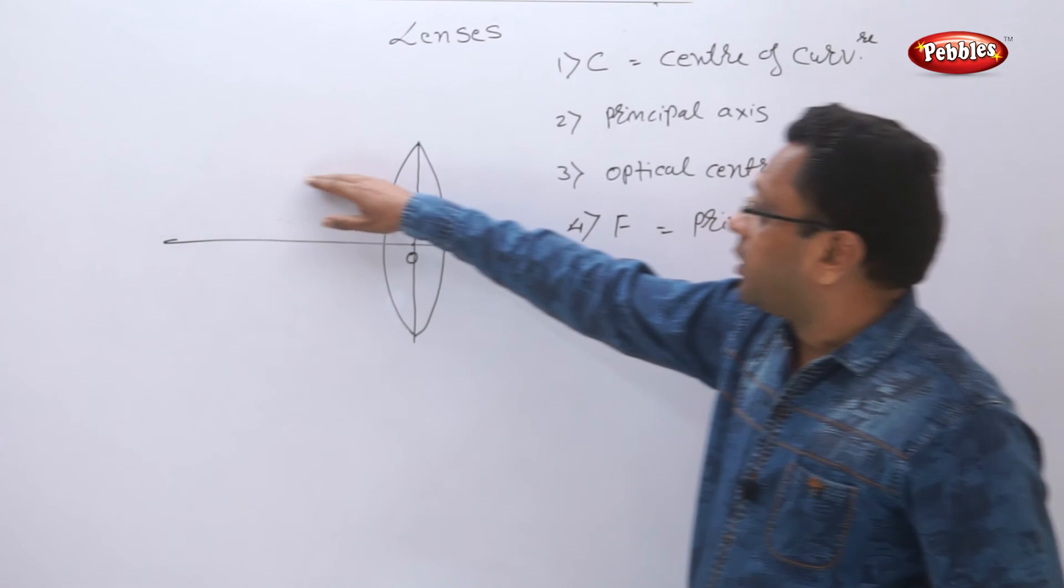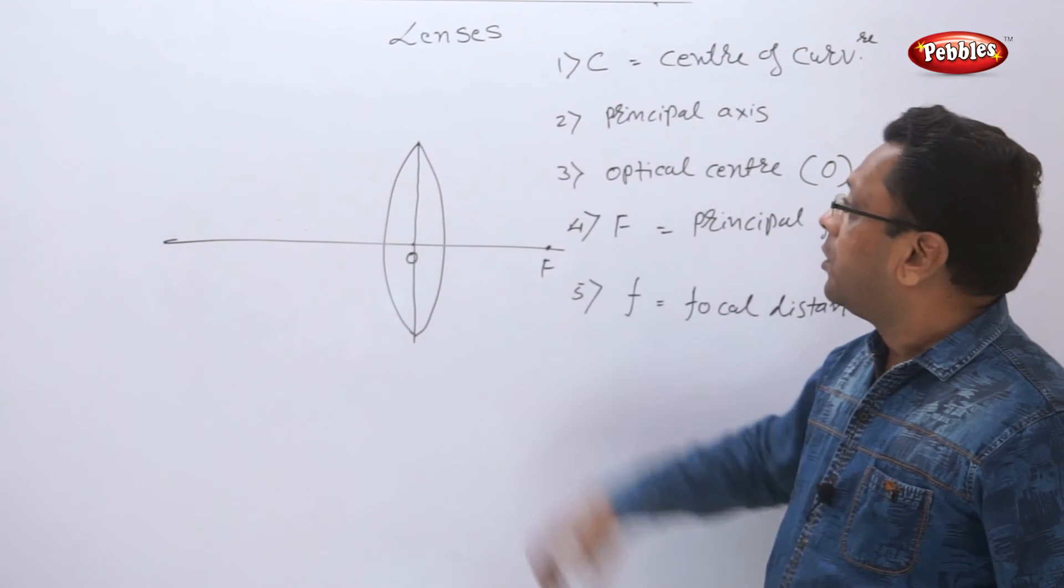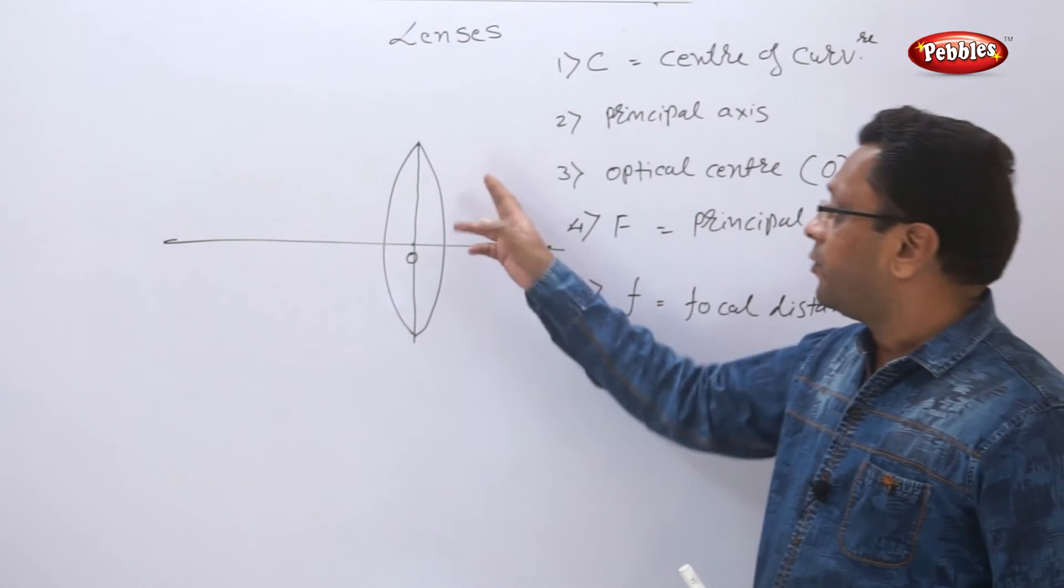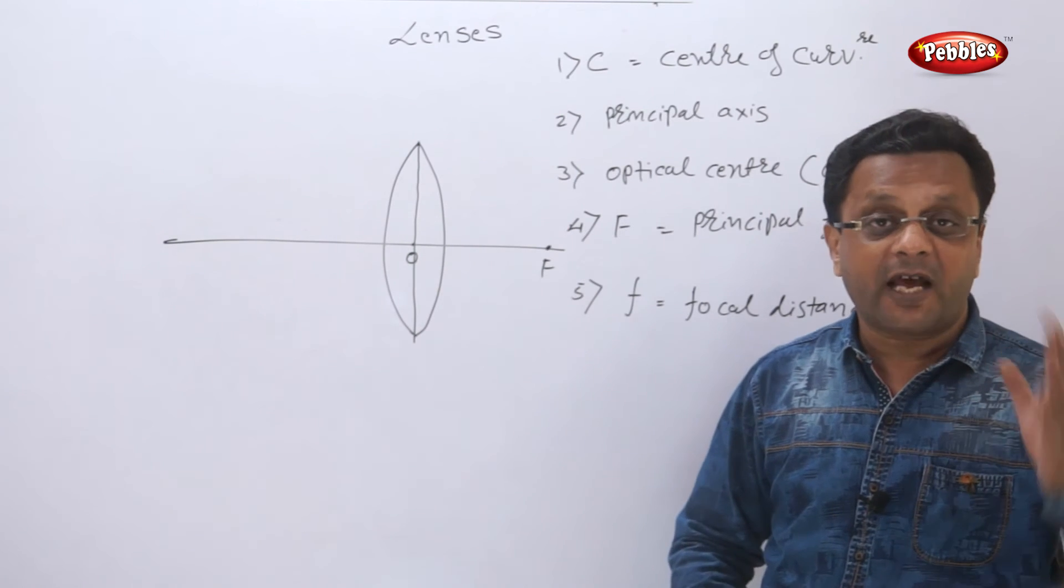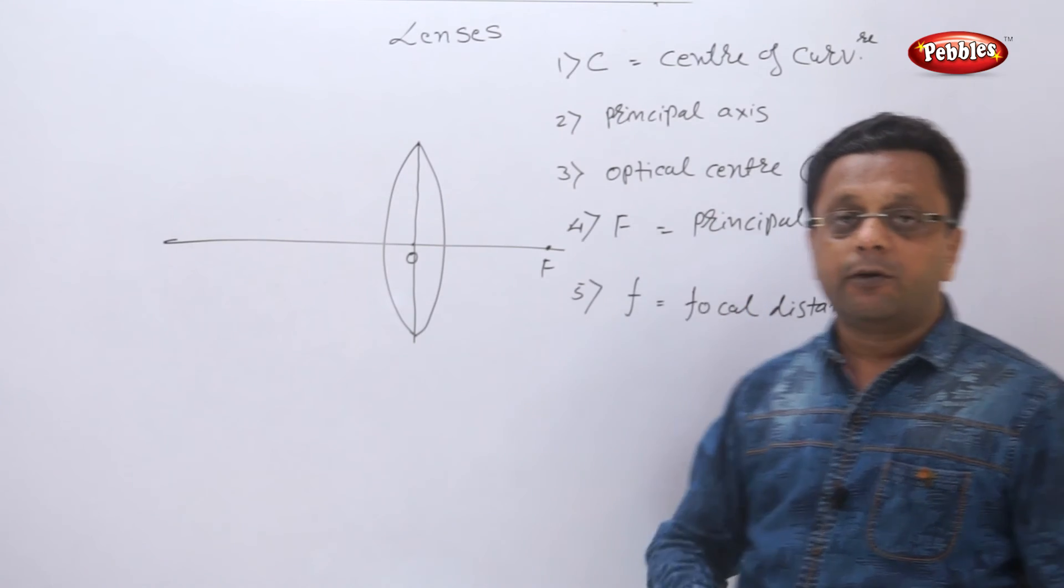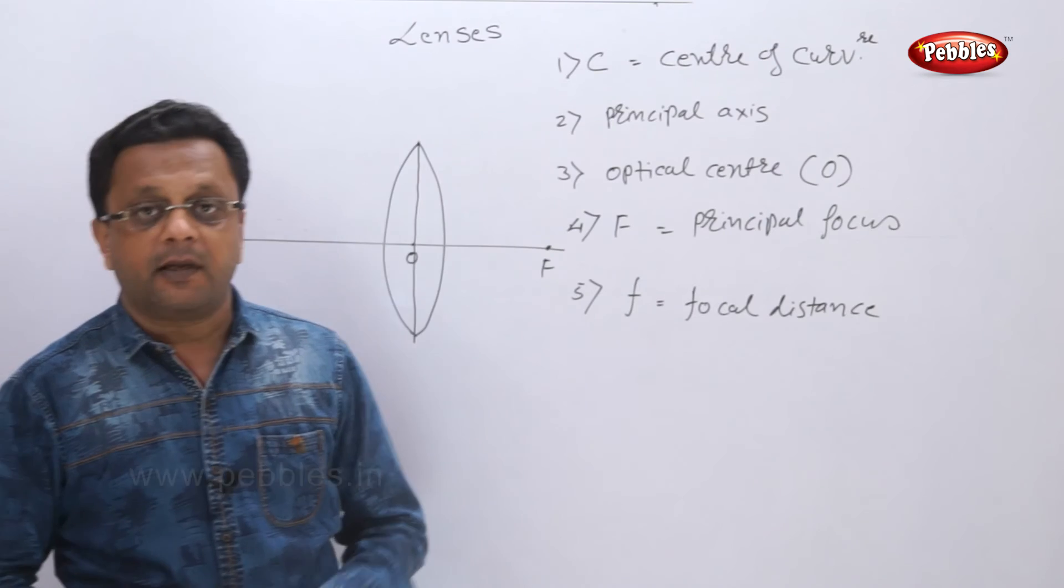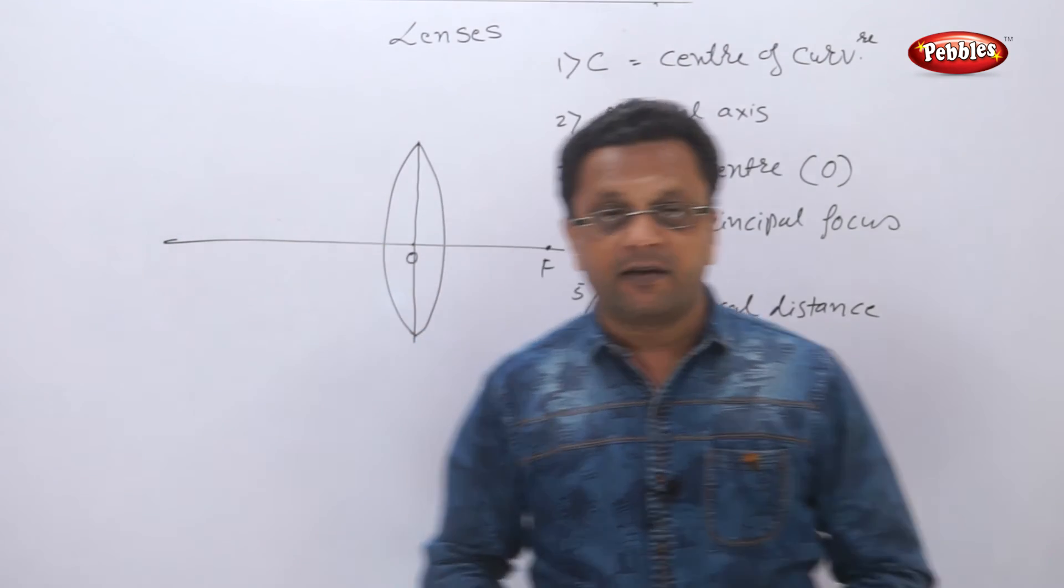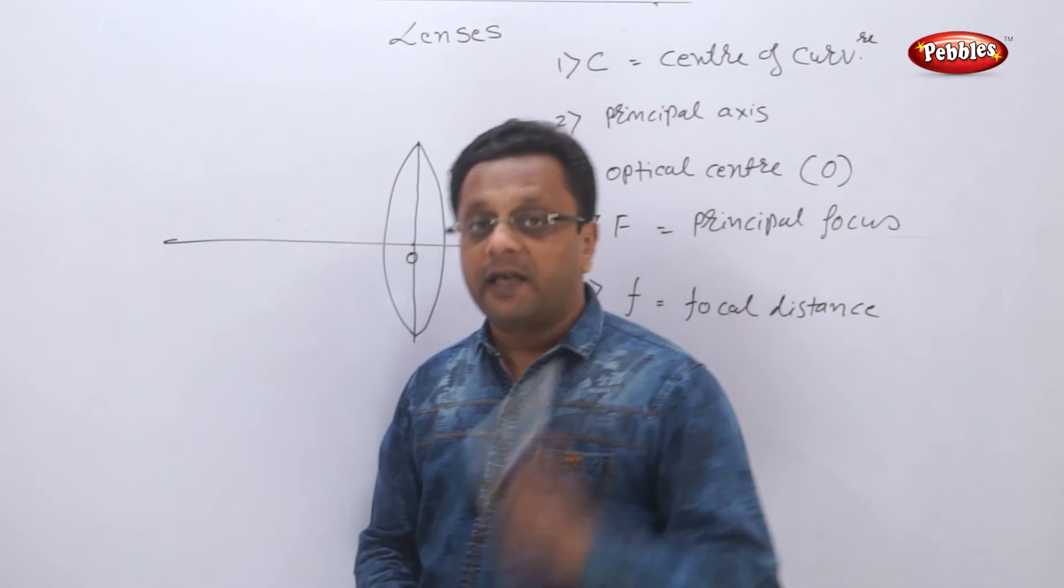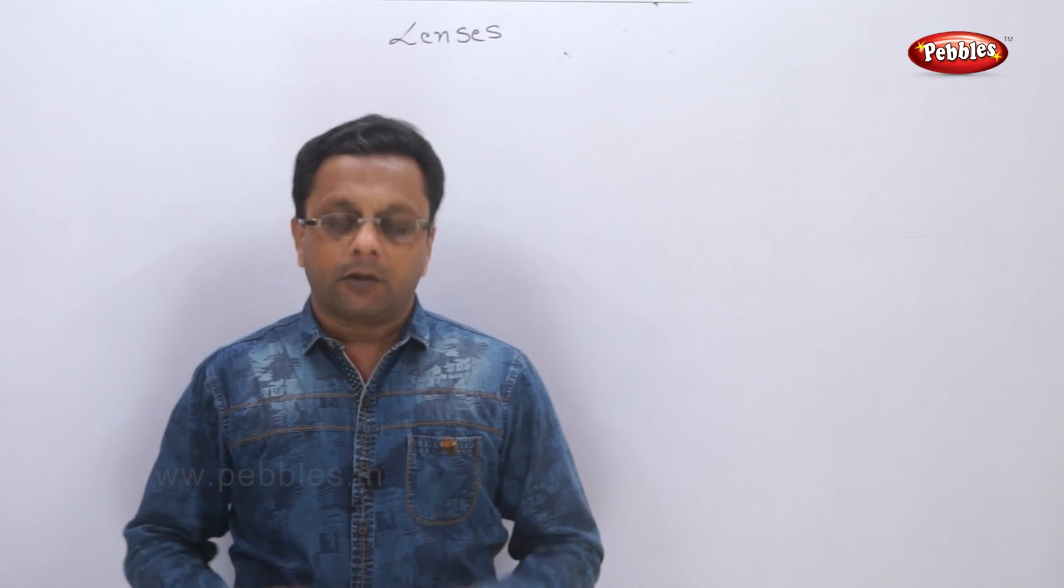But suppose the ray falls here, it will be converged, or in case of concave lens it will be diverged. So this kind of phenomena is known as refraction. So I will say that the refracted image - I will not call it the reflected image, it will be refracted. The light rays will be refracted and not reflected. In case of mirrors they are reflected, and in case of lenses they are refracted because they are passing through it.